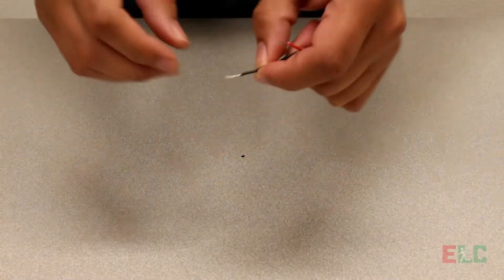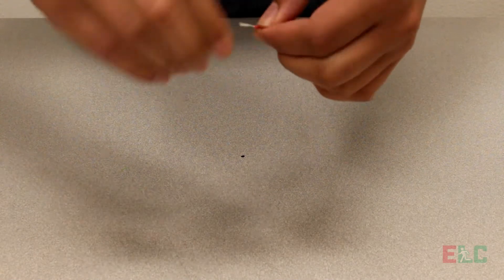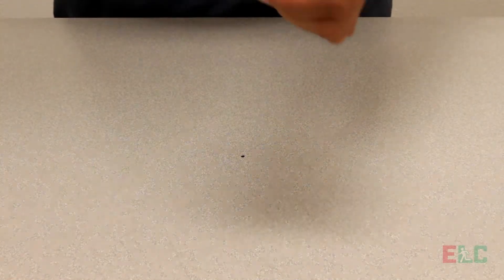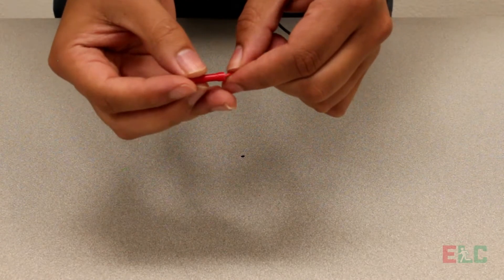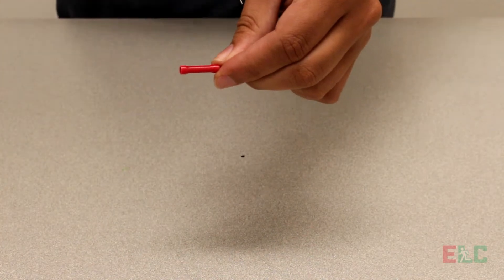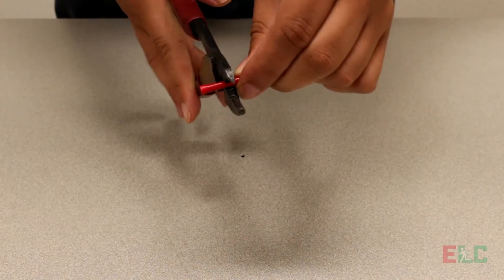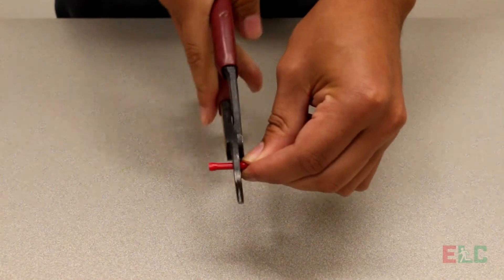Twist both wires and attach your butt connector. Using the crimper tool, crimp the edge of the connector and make sure the wire and the connector are secure.